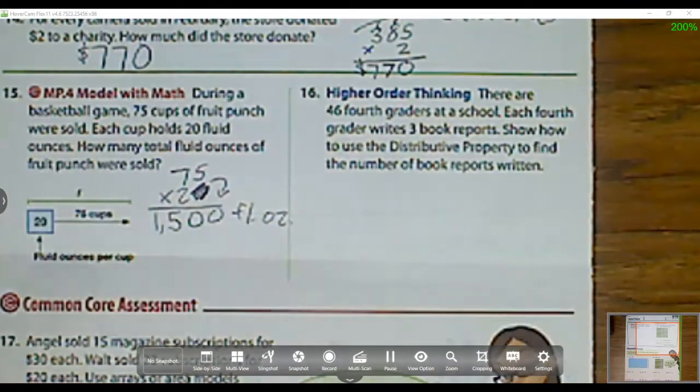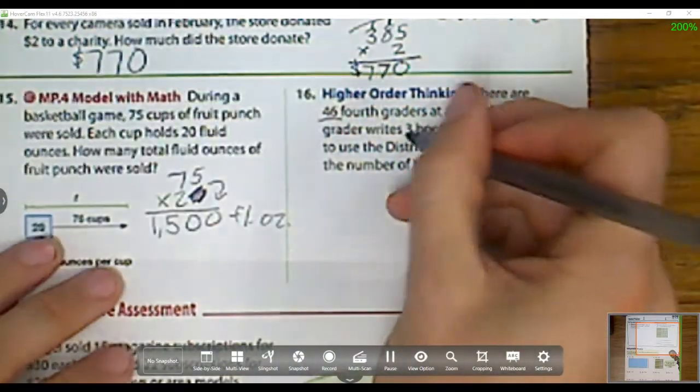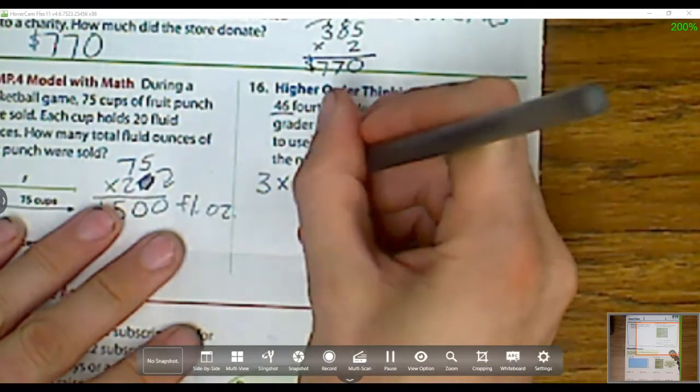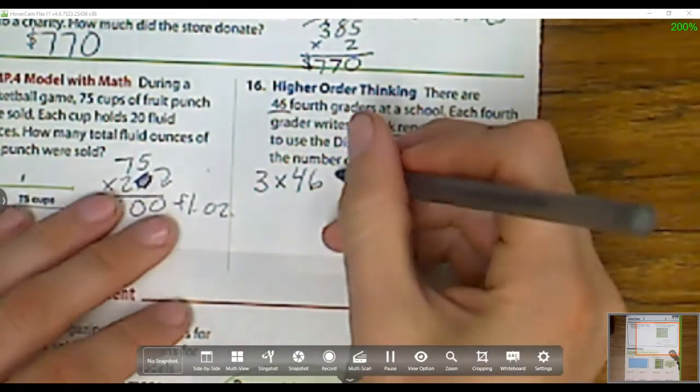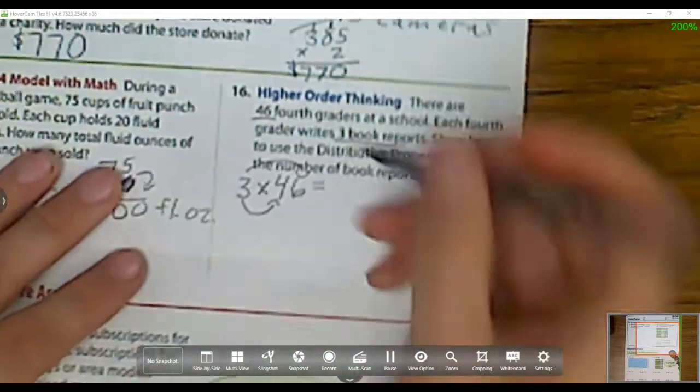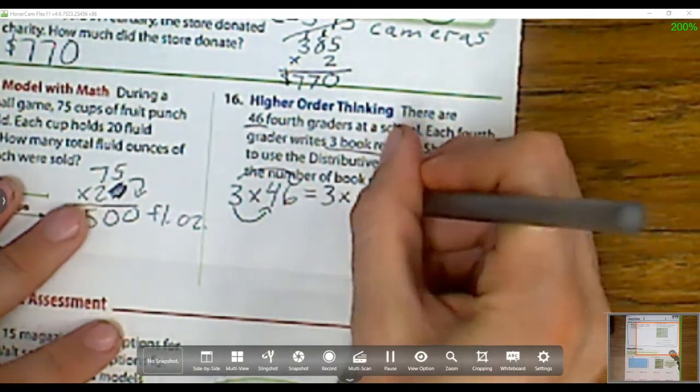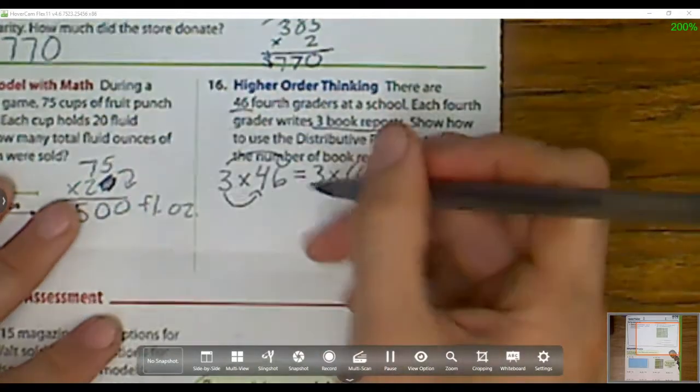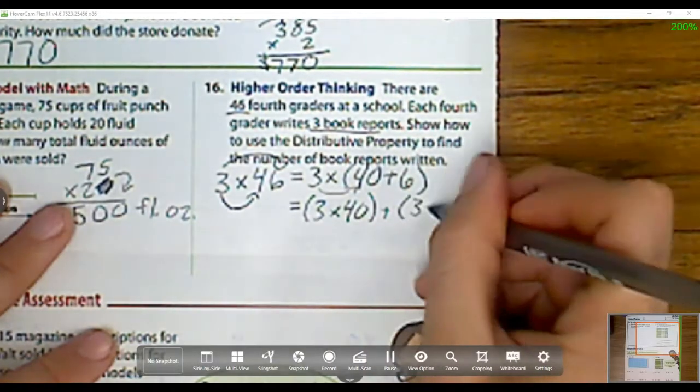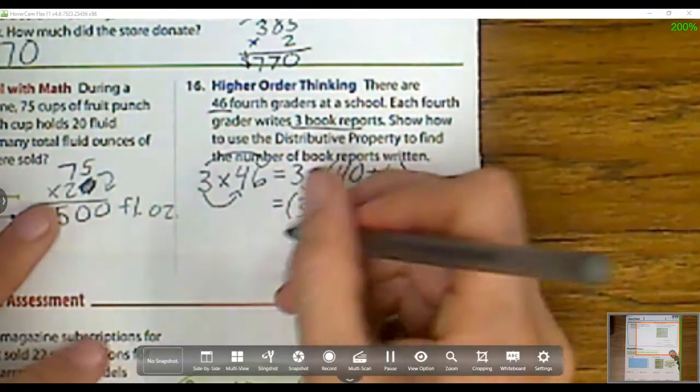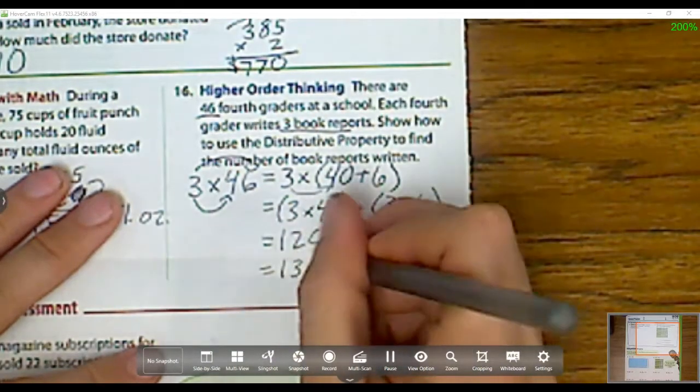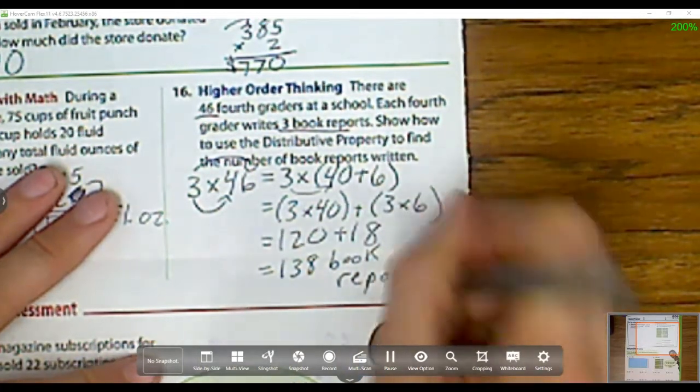Number 16 now. There are 46 fourth graders at a school. Each fourth grader writes 3 book reports. Show how to use the distributive property to find the number of book reports written. What it's asking me to do is this: I have 3 book reports times 46, there's 46 people. So how do I use that distributive property? Remember my distributive property is I multiply this 3 by every place value. I break that 46 up into 40 plus 6, and then I use that 3 and I distribute it to the 40. So I'd have 3 times 40 plus 3 times 6. So now I just solve that. That's going to be 120 plus 18. And what is that when I add that together? Well, that's 138 book reports.